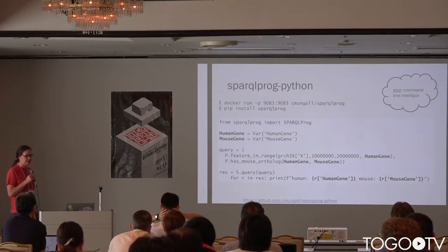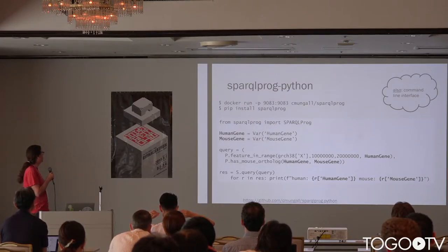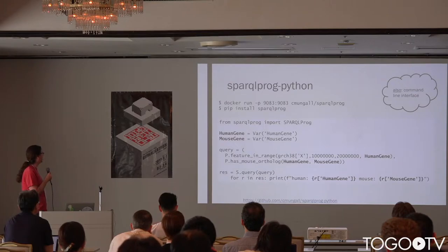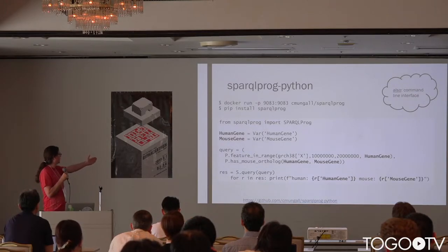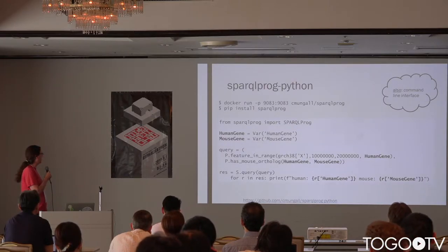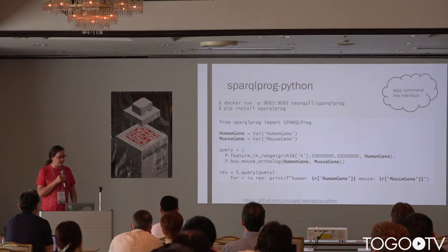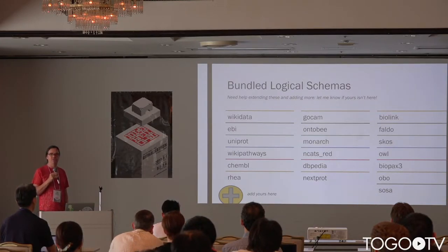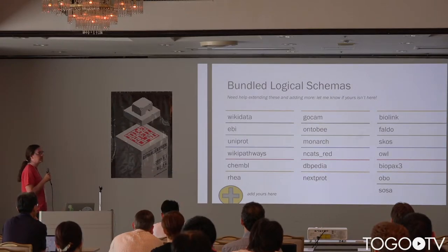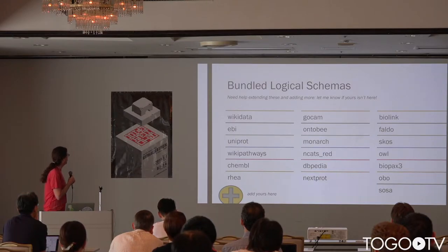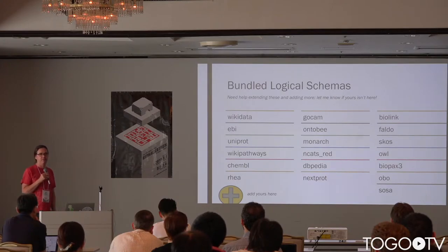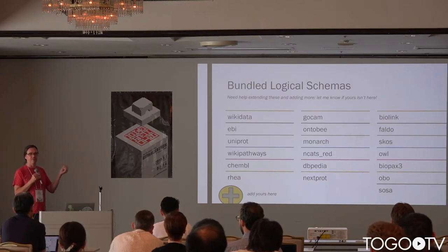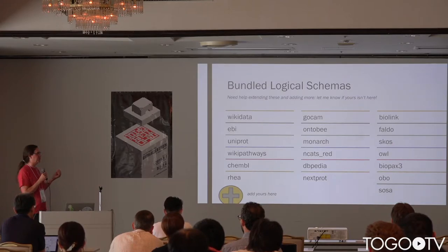There are various ways you can access this: a command line interface and a Python module. You can start up an engine using Docker or use one of the ones running on Heroku, and write a program using these N-ary predicates and execute it over the endpoint. It comes bundled with a number of program modules for existing schemas and endpoints. The Wikidata one is particularly useful because Wikidata is a really awesome resource, but it can be quite hard to author queries for, especially for N-ary relationships using their reification model.